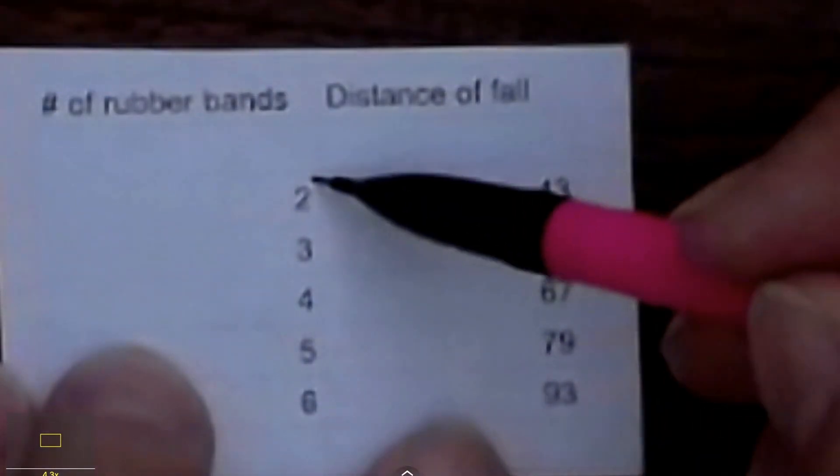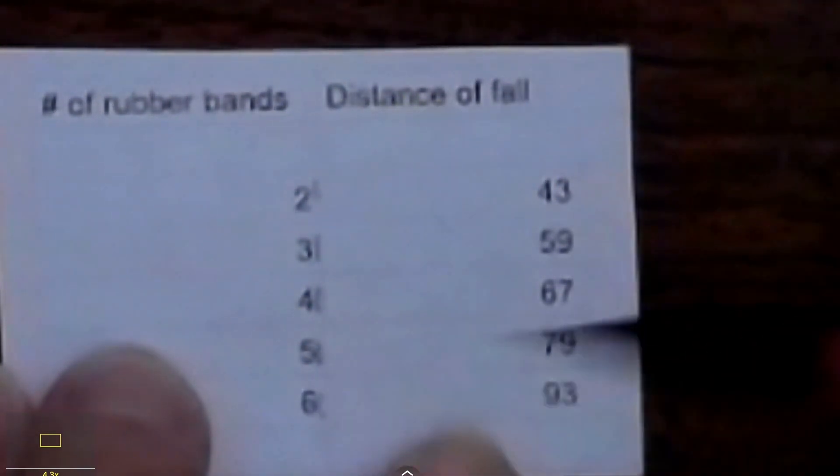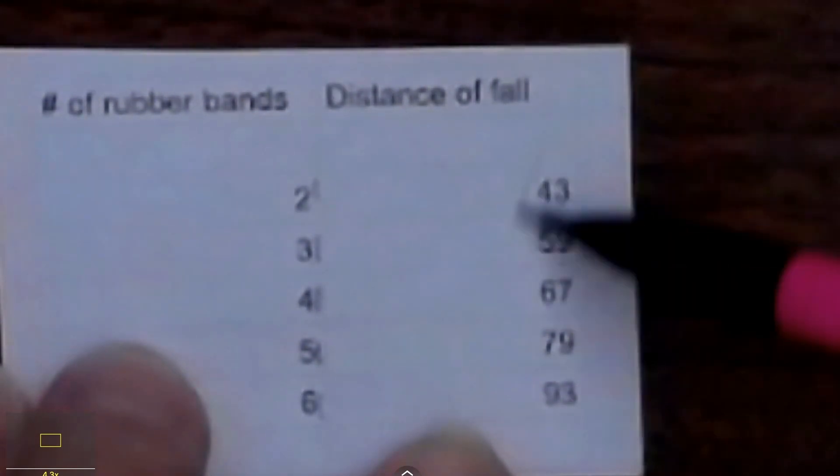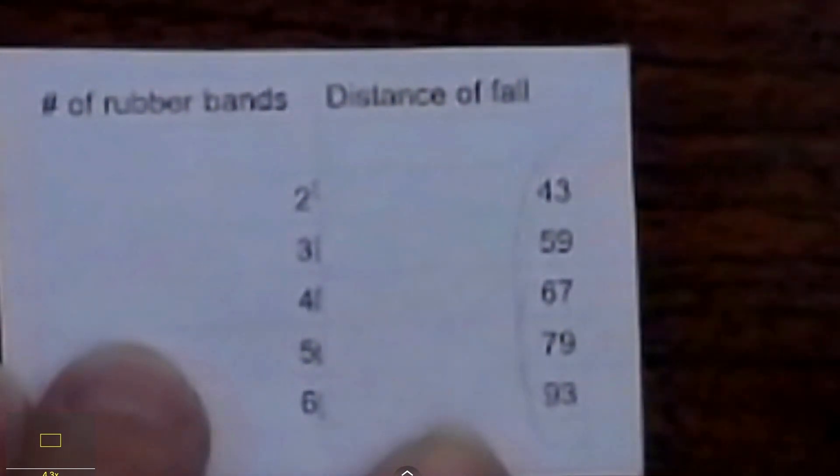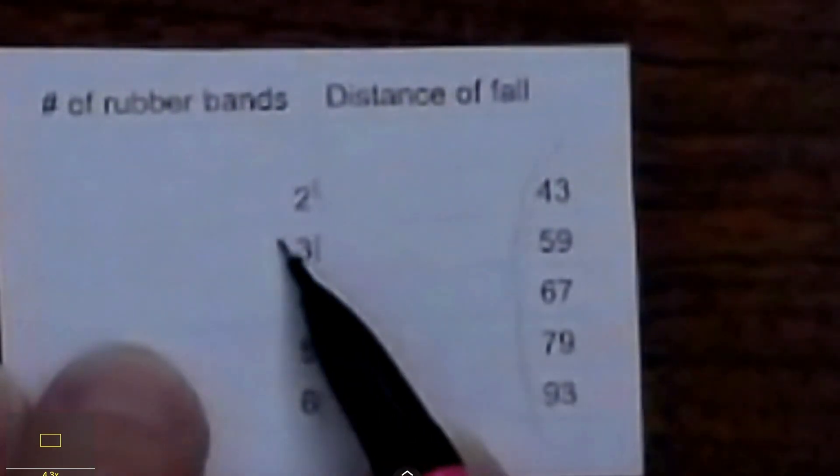I tell my students that the independent variable is the thing that you write in your data table ahead of time. For instance, when using this sample data, when they create the data table, they have already written the number of rubber bands in the data table. This is what they are manipulating on purpose, their independent variable. And then this is the results of their experiment or the responding variable. It depends on what this number is.